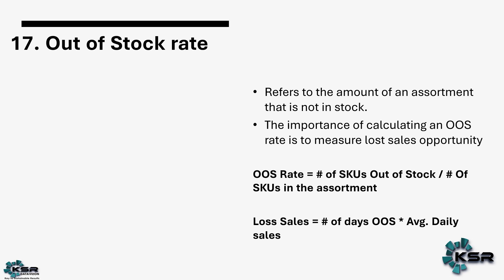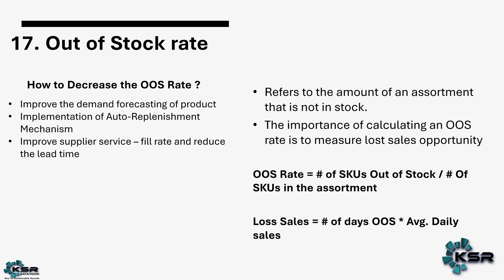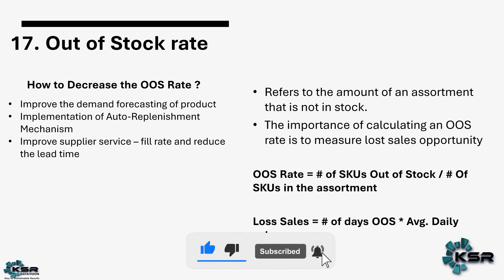Loss of sales is calculated as number of days the product was out of stock multiplied by average daily sales. To prevent high out-of-stock rates: implement improved demand forecasting at the product level using a demand forecasting model. Manage inventory with an auto-replenishment system — whenever a product goes below a certain threshold, an automatic order is placed to the vendor or warehouse. Also, improve supplier fill rate and lead time.